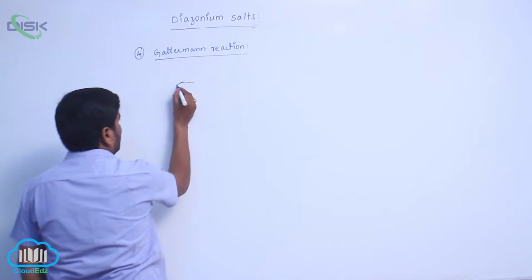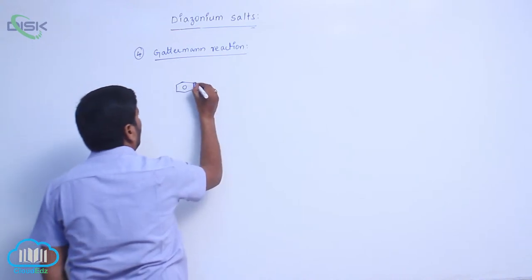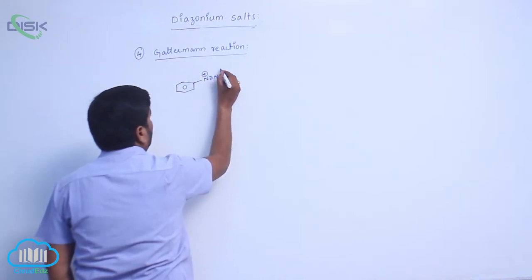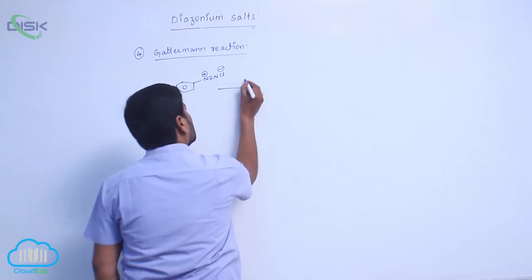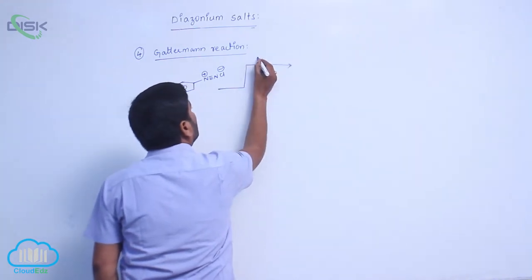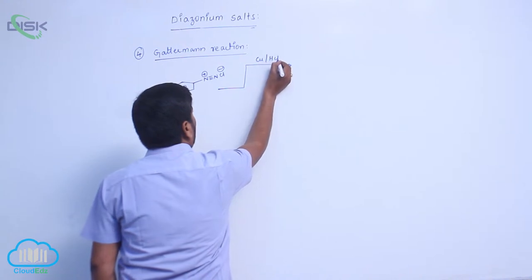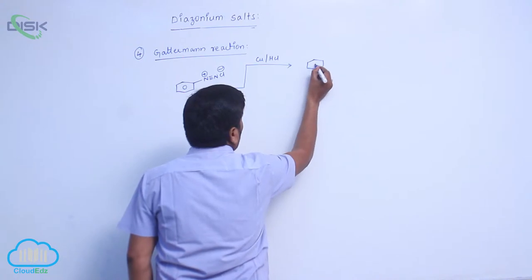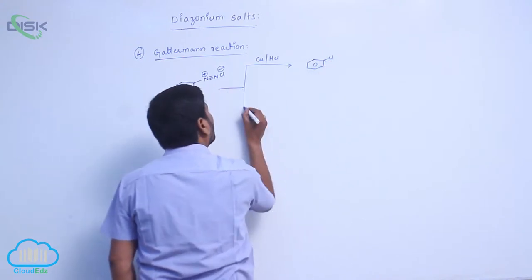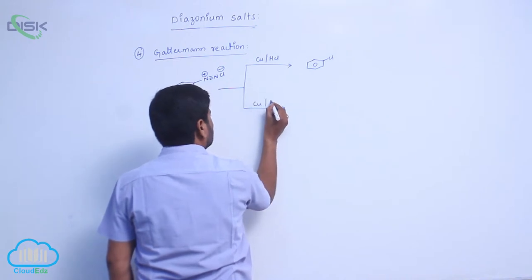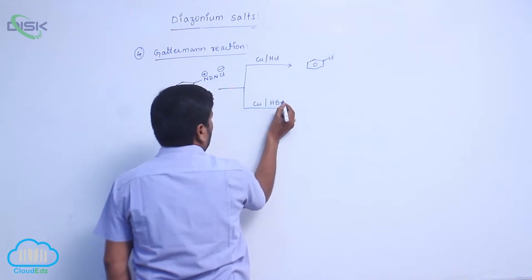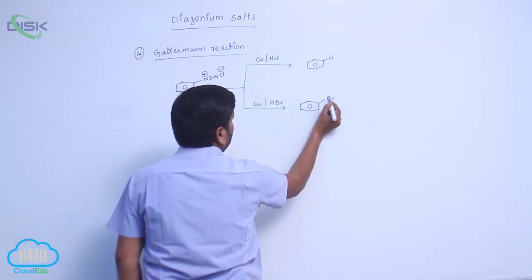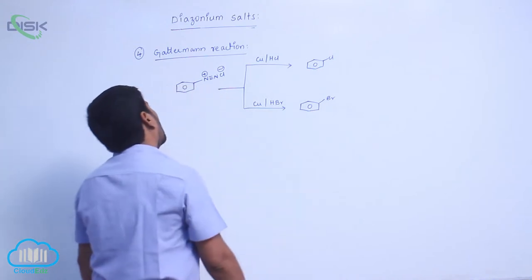When benzene diazonium chloride (C6H5-N≡N+Cl-) reacts with copper in presence of hydrochloric acid, it forms chlorobenzene. Or with copper in presence of hydrogen bromide to form bromobenzene.